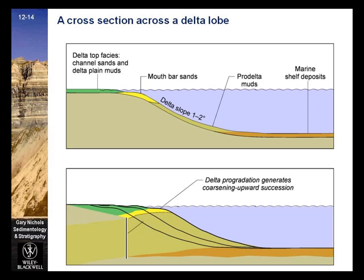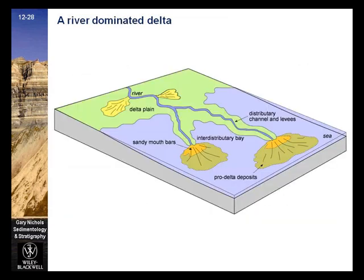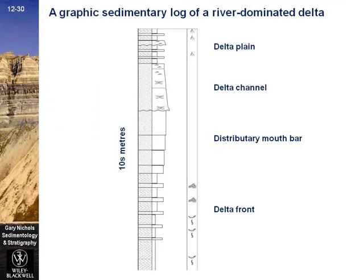This is a cross section across a delta lobe. Delta slope is gentle at 1 to 2 degrees and steepens as the delta progrades. Delta progradation produces a coarsening-upward sequence. A river-dominated delta progrades through several distributary channels, each of which produces a small-scale delta. This is a graphic sedimentary log of a river-dominated delta showing deposits of the delta front, distributary mouth bar, delta channel, and delta plain. The coarsest deposits are found in the distributary mouth bar and delta channel, and fine sediments in the delta front and delta plain.